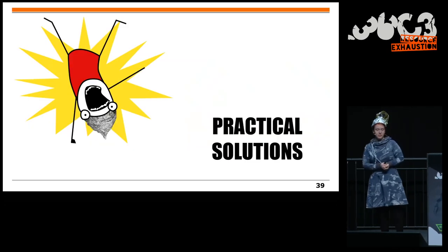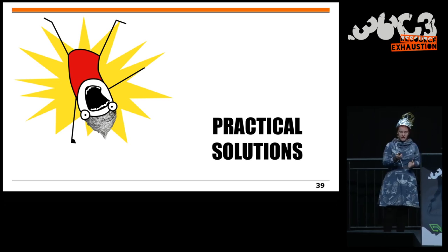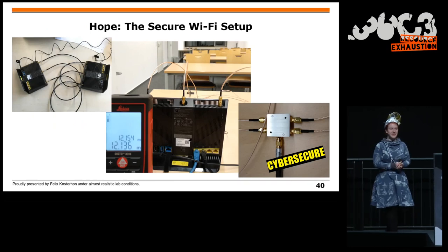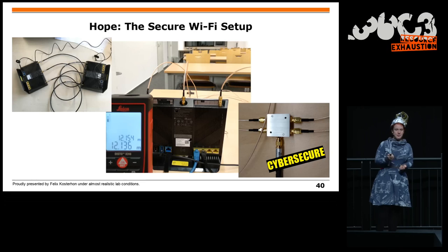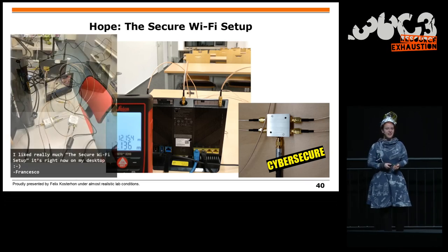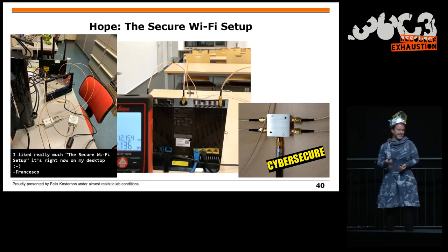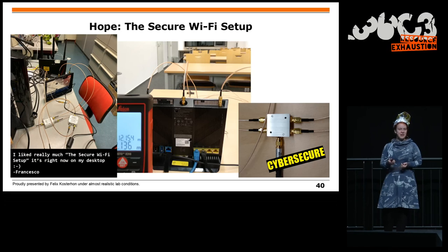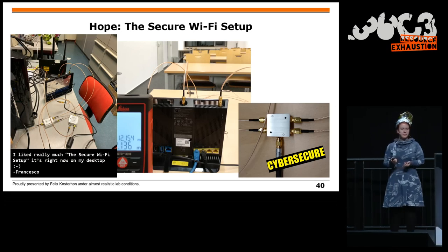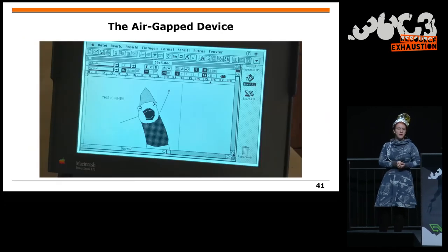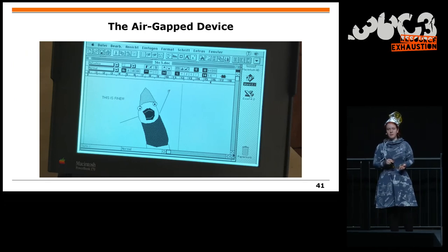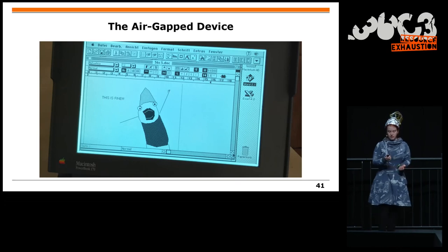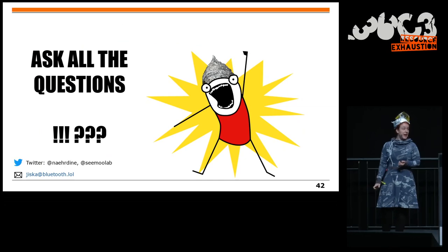For practical solutions if you do not have a tinfoil hat: one recommendation is a secure Wi-Fi setup using antenna cables instead of antennas — something we do in our lab a lot. Or you go to an air-gapped device, like my PowerBook 170 — a great device, almost impossible to get online, and it has Word and Excel.